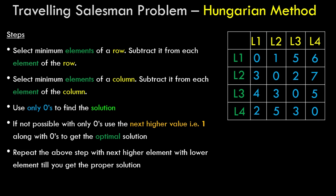Step three: use only zeros to find the solution — we perform zero assignment. If you've seen the Hungarian method for the assignment problem in this playlist, you'll be familiar with this. Step four: if not possible with only zeros, use the next higher value — that is, 1 — along with zeros to get the optimum solution, repeating with higher elements until you get the proper solution.